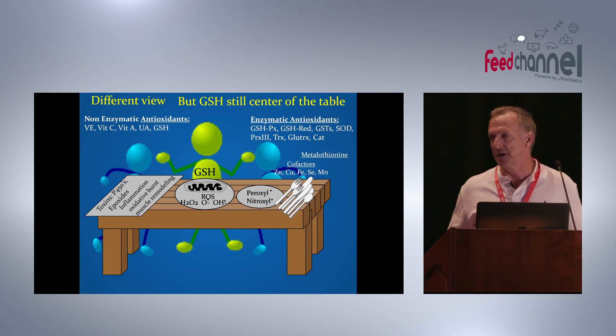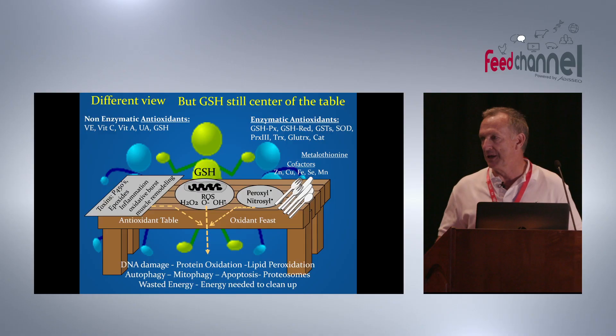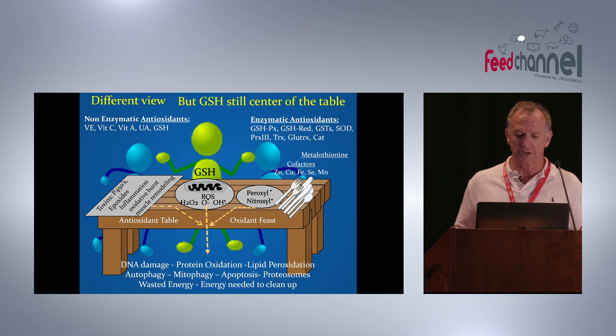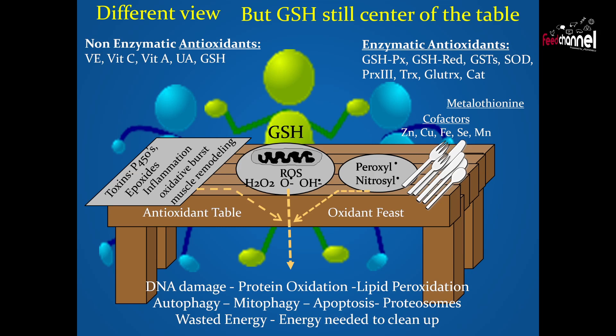On the right are cofactors used for many enzymatic antioxidants — forks, knives, and spoons, so to speak. Metallothionein is very important in sequestering ions; you don't want free metal ions roaming around because this causes oxidation. It's an antioxidant table with an oxidant feast. If antioxidants don't clean everything up, you get DNA damage, protein oxidation, lipid peroxidation, autophagy, mitophagy, apoptosis, etc. You have to have a whole lot of ATP invested to clean this up — it's a very expensive process.